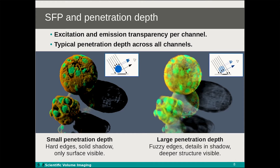One of the most important SFP renderer settings is called the penetration depth. This parameter sets the absorption and emission transparencies for all channels at the same time. With a low penetration depth, the excitation light is absorbed by the object almost immediately and the object appears very solid, also casting a hard shadow. When we increase the penetration depth, the light has a chance to penetrate deeper into the object, revealing internal structures and giving the image an overall softer and more transparent look. The shadow is also softer and reflects the internal structure of the objects.